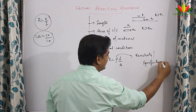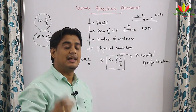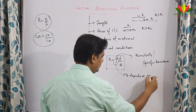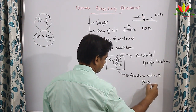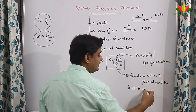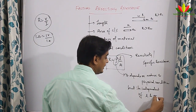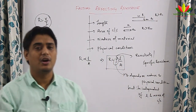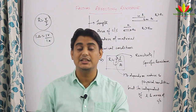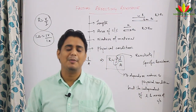Resistivity is also called specific resistance. Resistivity is a property which is independent of the length and area of cross-section — very important. Resistivity depends on nature and physical condition, but it is independent of length and area of cross-section. So a one-meter wire and a ten-meter wire will both have the same resistivity. Resistance was a property that changed based on length and area, but resistivity does not depend on these factors, so we classify materials based on their resistivity.